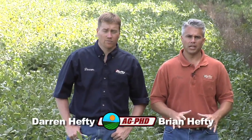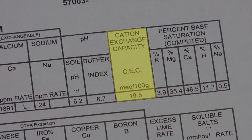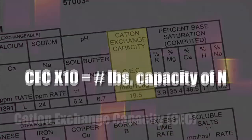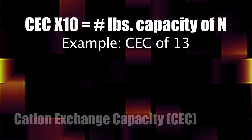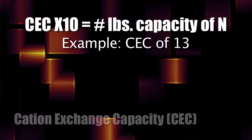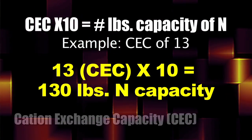The most important thing you need to know about nitrogen management in the soil is you've got to get a cation exchange capacity test when you're doing soil testing, and that number is going to tell you the overall holding capacity of your soil. A simple way to use that for nitrogen is multiply your cation exchange capacity, or CEC, times 10. So for example, if we had a 13 for CEC, that soil could hold approximately 130 pounds of nitrogen at any one time.